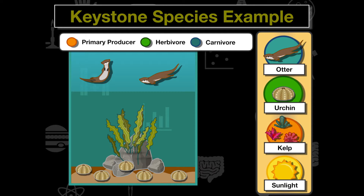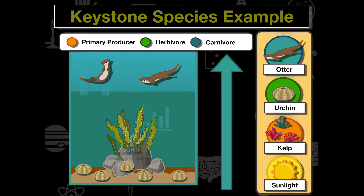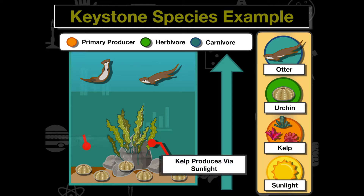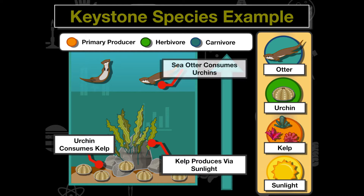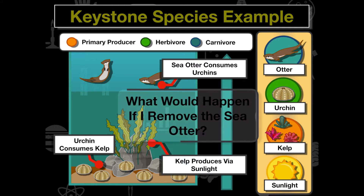The kelp feeds the urchins, which are herbivores, and the otters feed on the urchins — those are our carnivores in this ecosystem. This is a delicate balance. Energy from sunlight is transferred up the chain. The urchins keep the kelp population in check, and then the sea otters consume the urchins, keeping the urchin population in check.